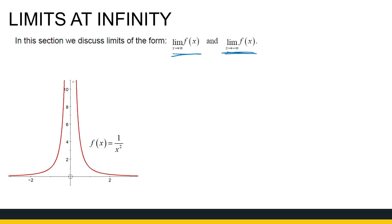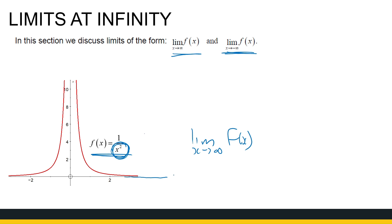It's always easier to see it with a sketch before we look at it algebraically. If I look at the sketch of 1 over x squared, I can see that as x approaches infinity, this function gets closer and closer to the x-axis. It never gets there, but as x gets larger and larger, 1 over x squared gets closer and closer to zero. So that limit value is zero.